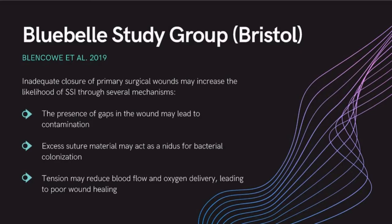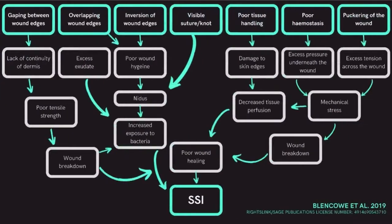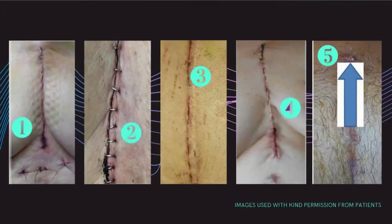There are other benefits as well. SSI prevention is understood to be a combination of infection prevention practices and exacting surgical technique. I'd like to highlight the work of the Bluebell Study Group who looked at surgical images taken in theatre. The Bristol group published on how inadequate closure of primary surgical wounds may increase the likelihood of SSI. The presence of gaps in the wound may lead to contamination, excess suture material may act as a nidus for bacterial colonization, and tension may reduce flow and oxygen delivery leading to poor wound healing.